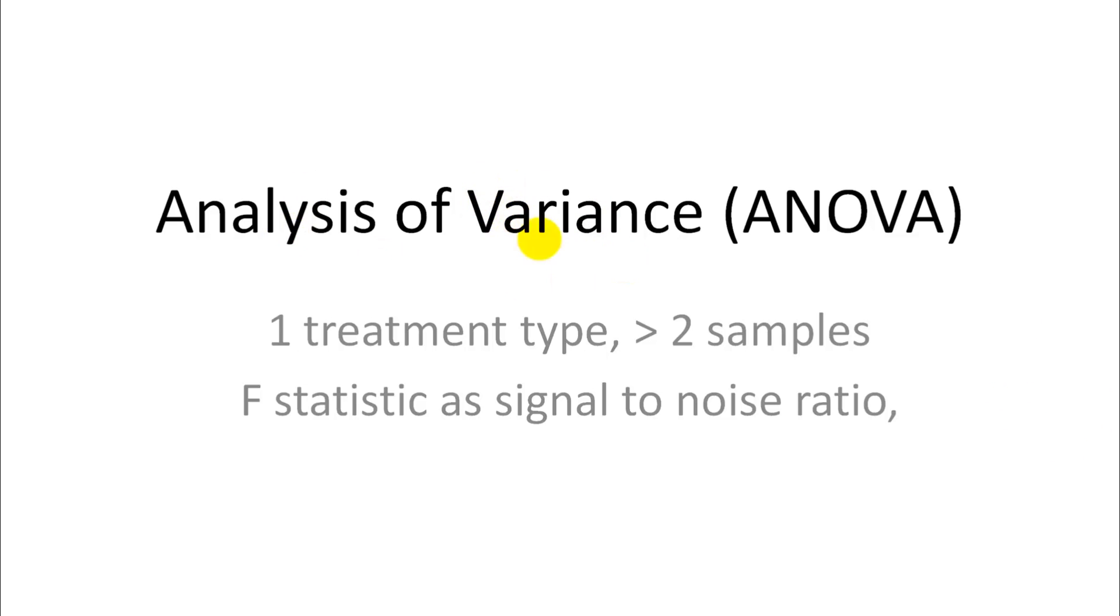That's an analysis of variance that we use for those type of problems. They can have multiple treatment types, but we start with one treatment type, so we're sticking to our lentil variety trial. In this case we introduce a third sample, so we have variety A, B, and C.